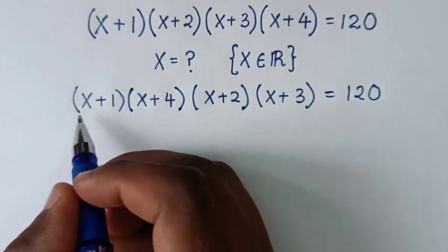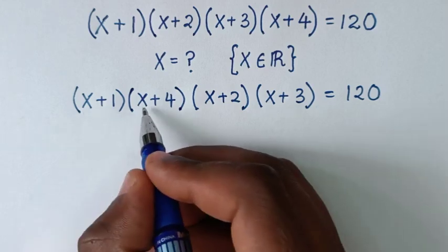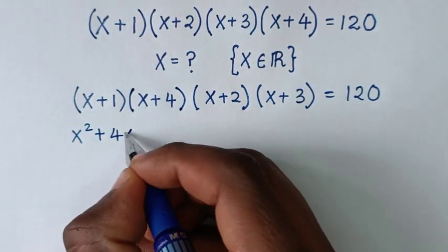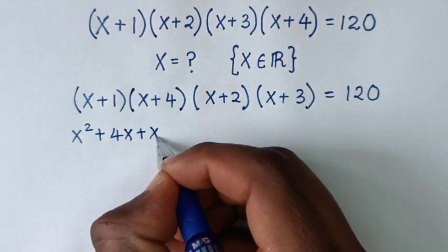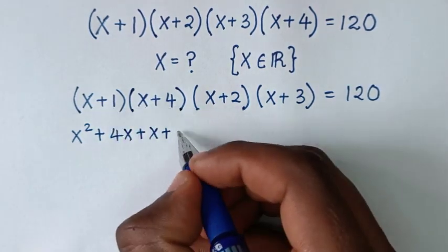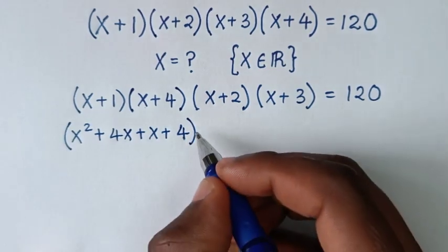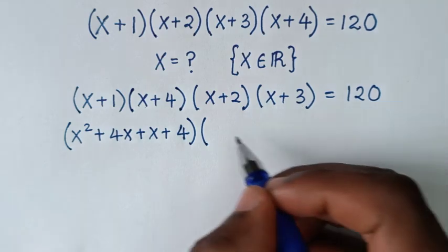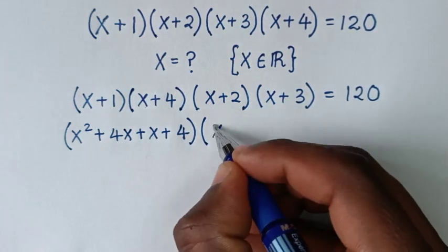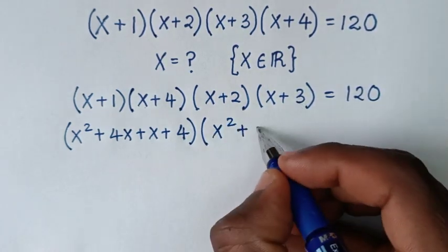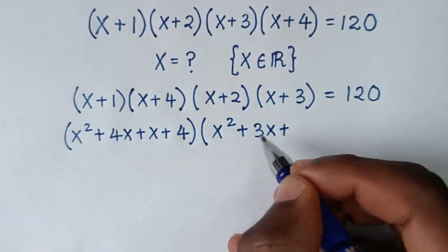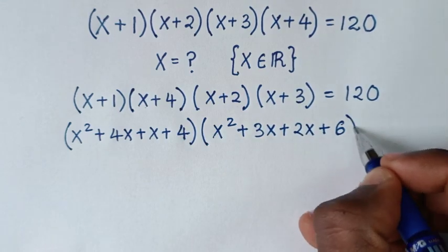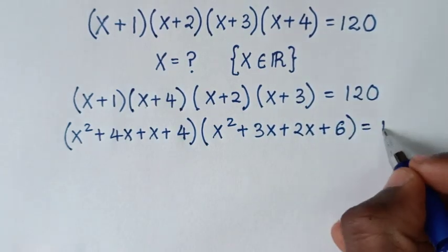Then, expanding (x+1)(x+4): x squared plus 4x plus x plus 4. Then expanding (x+2)(x+3): x squared plus 3x plus 2x plus 6, equal to 120.